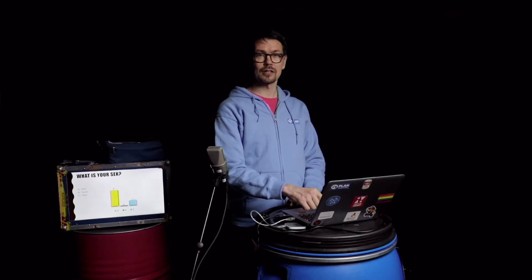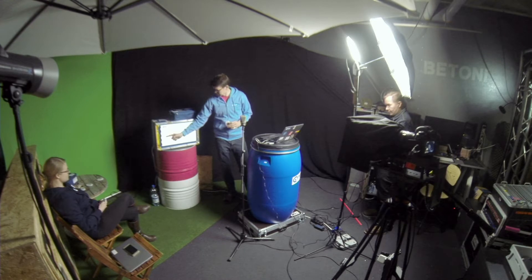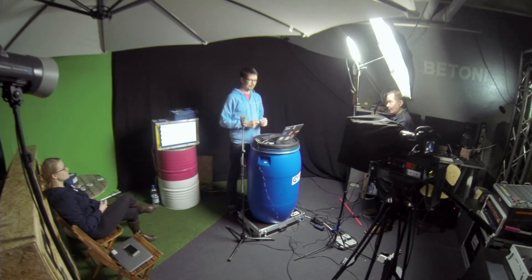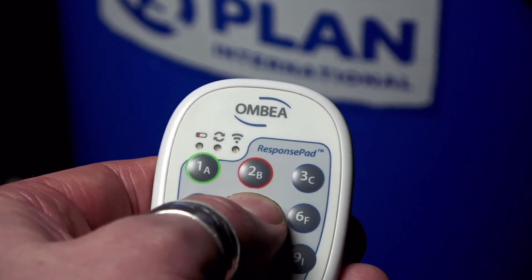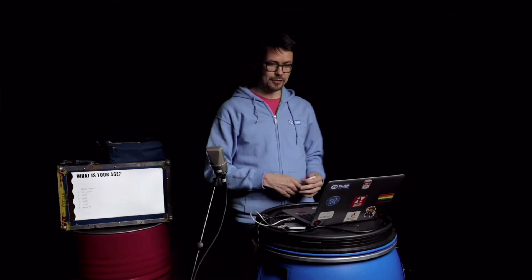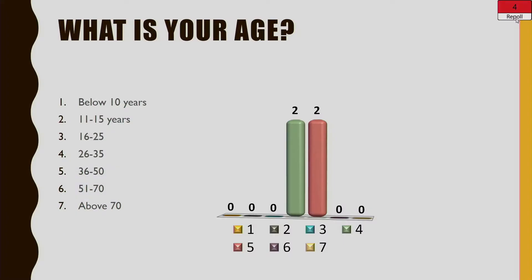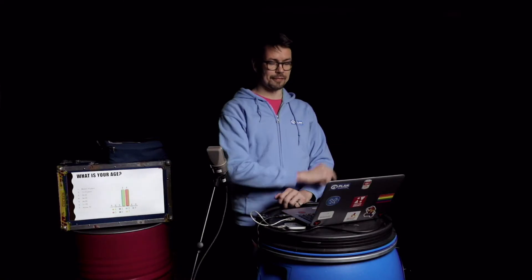We go to the next question by pressing space: 'What is your age?' Now we have seven different options numbered one through seven, and on the clicker you can see the same symbols. The slide is active so the audience can go ahead and respond. Once all four responses are in, we stop and immediately get the results. Out of the group of four — you could have 40 or even more — about two respondents were between 26 and 35 and two were between 36 and 50.